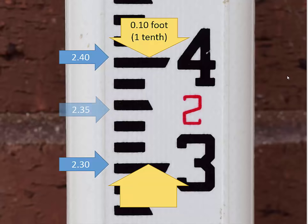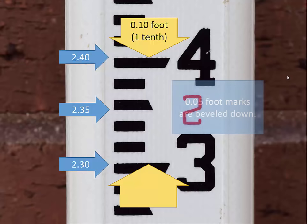Notice here there is another mark that is beveled downward. The bottom or beveled edge reads as 2.35 feet. Halfway between each pair of tenth marks you'll find a half tenth mark like this one. A half tenth equals 0.05 feet or five hundredths of a foot.